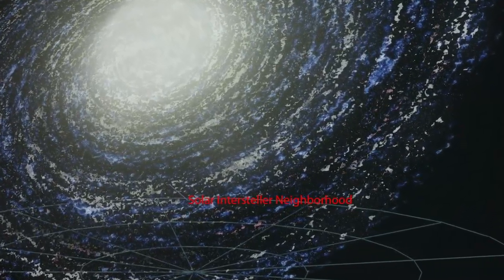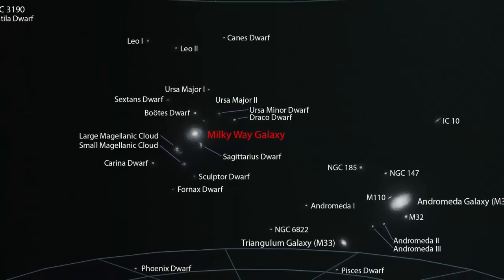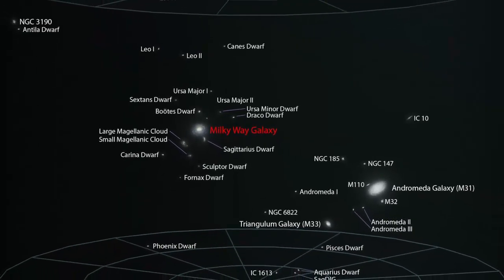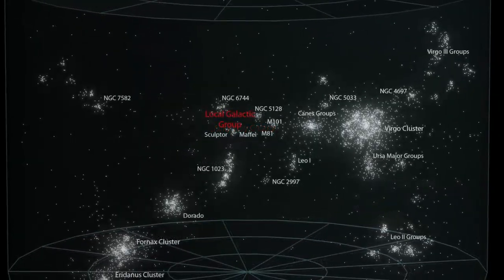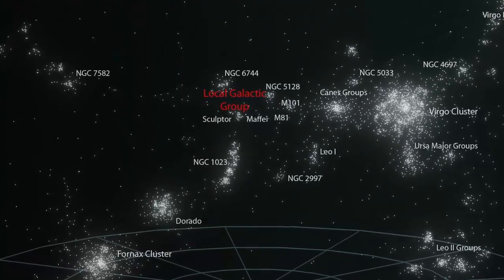Feeling small yet? As large as our galaxy is, take a look at it sitting among the others in what is referred to as our local galactic group. Which, when backed out again, takes us to the large Virgo supercluster.